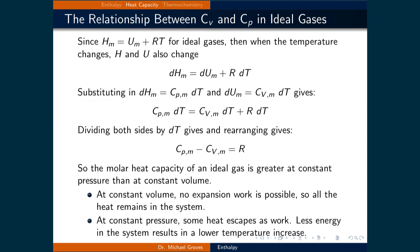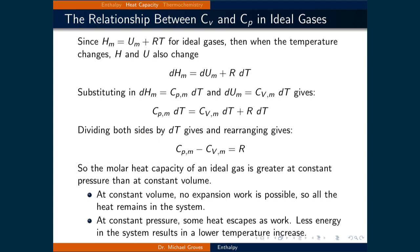Dividing both sides by dT and rearranging, we get that the molar heat capacity at constant pressure minus the molar heat capacity at constant volume equals R, the gas constant. So the molar heat capacity of an ideal gas is greater at constant pressure than at constant volume.